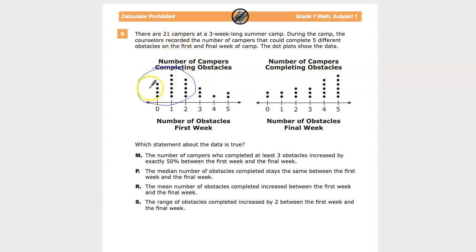So out of 21 campers, you have 1, 2, 3, 4, 5, 6, 7, 8, 9, 10, 11, 12, 13, 14, 15 of them who didn't complete, who completed two or less.